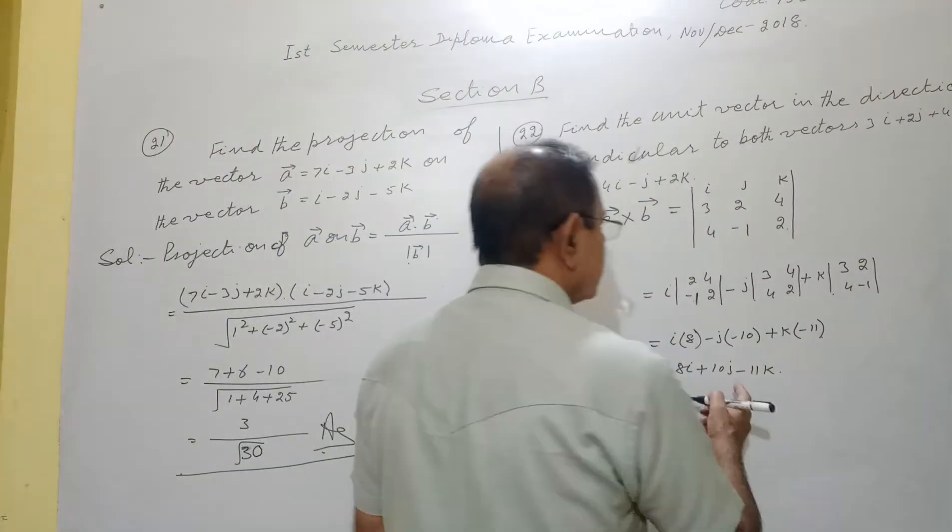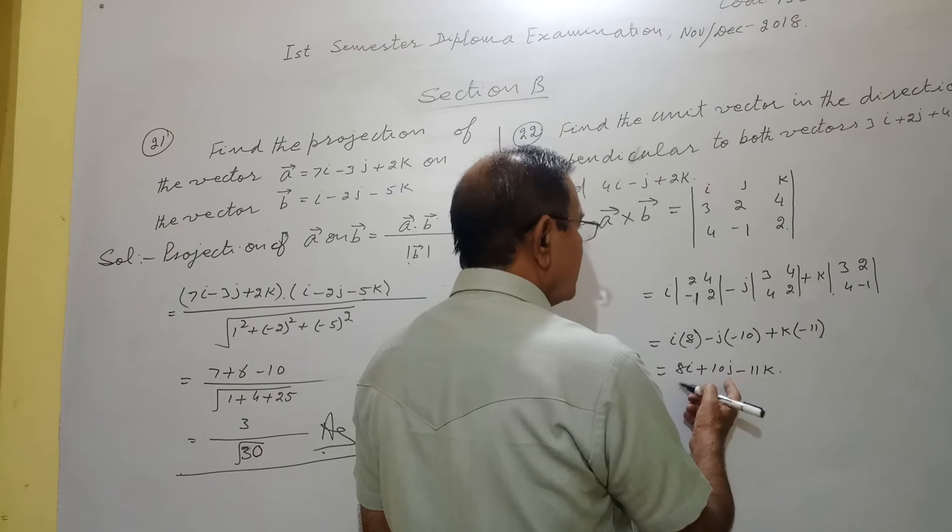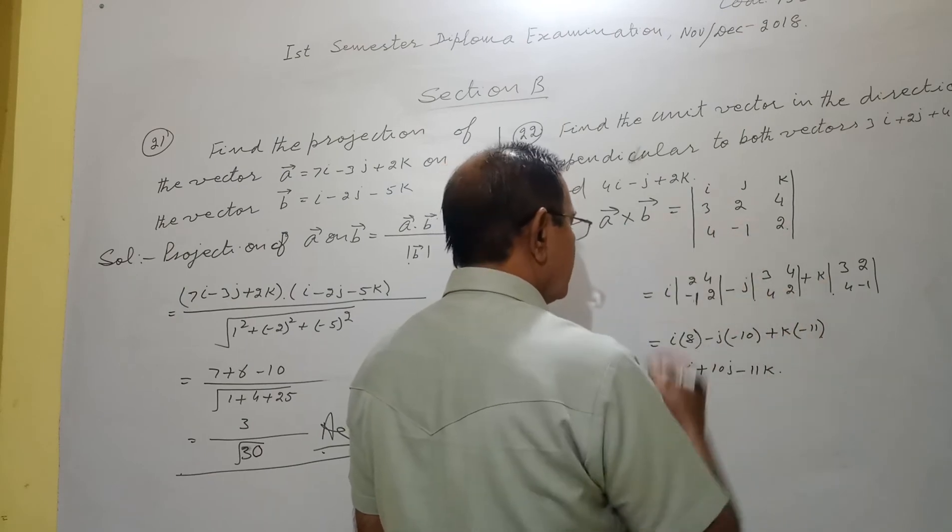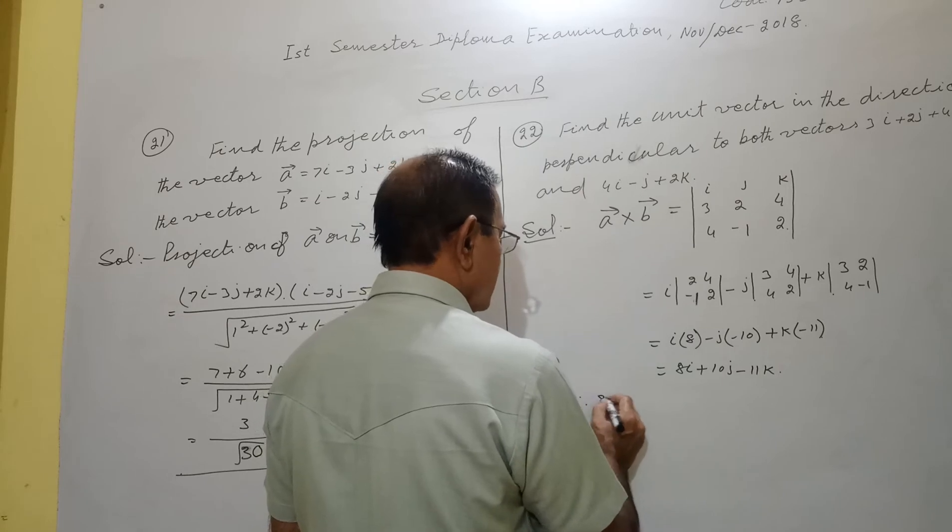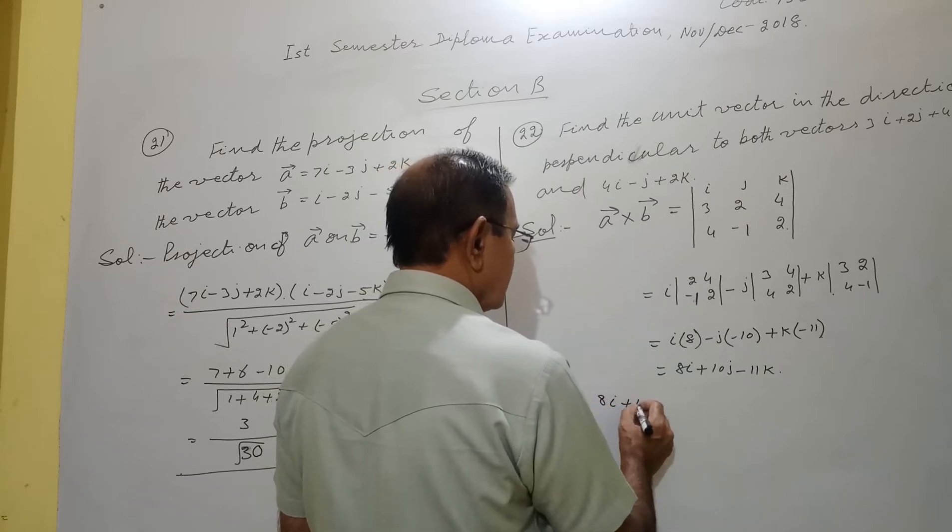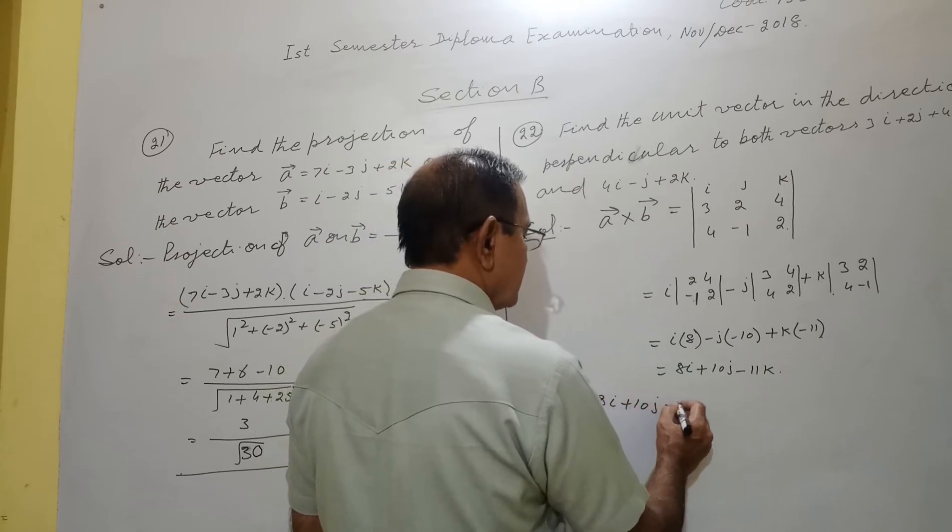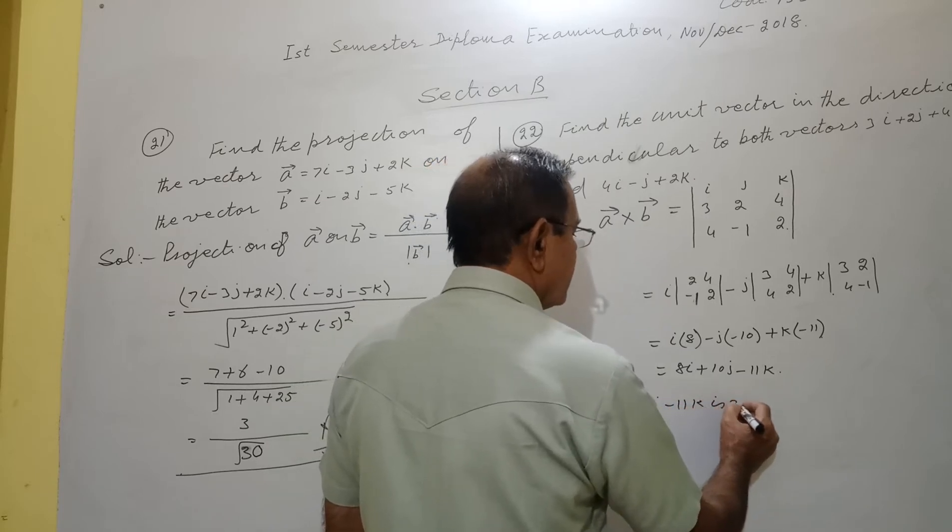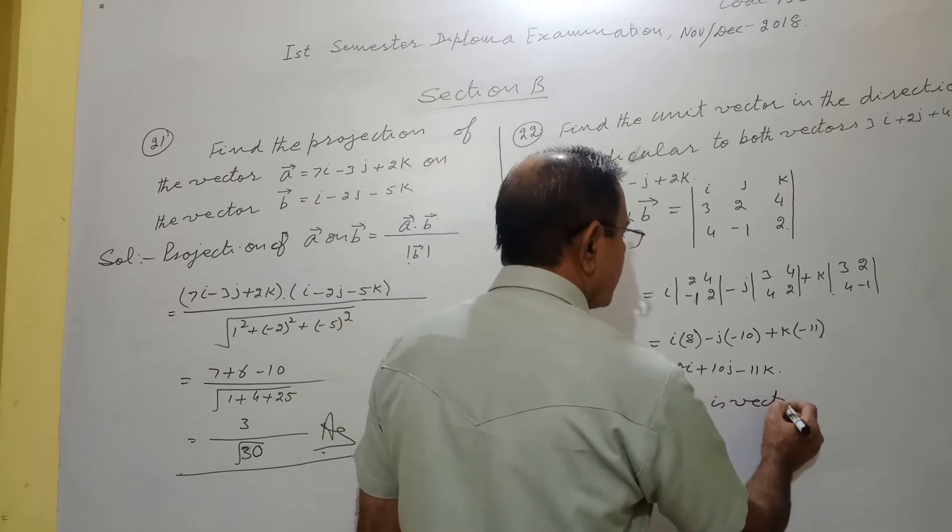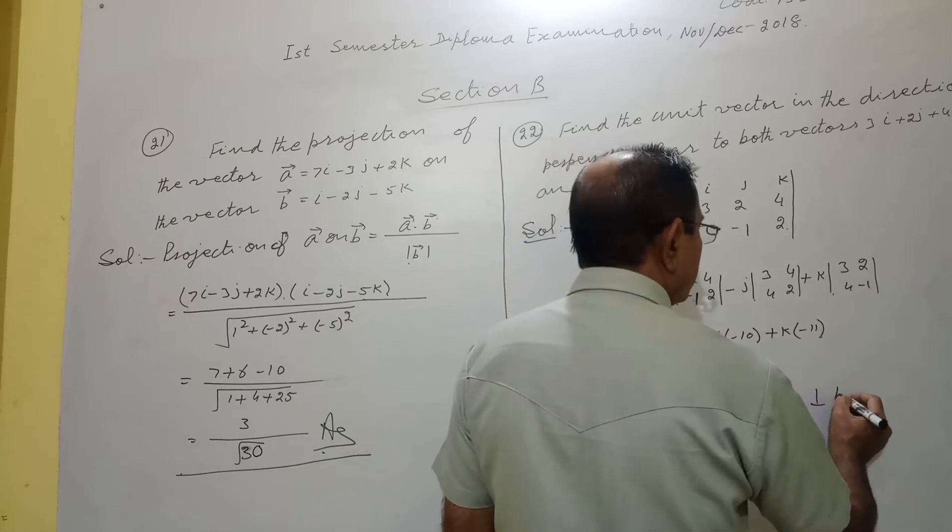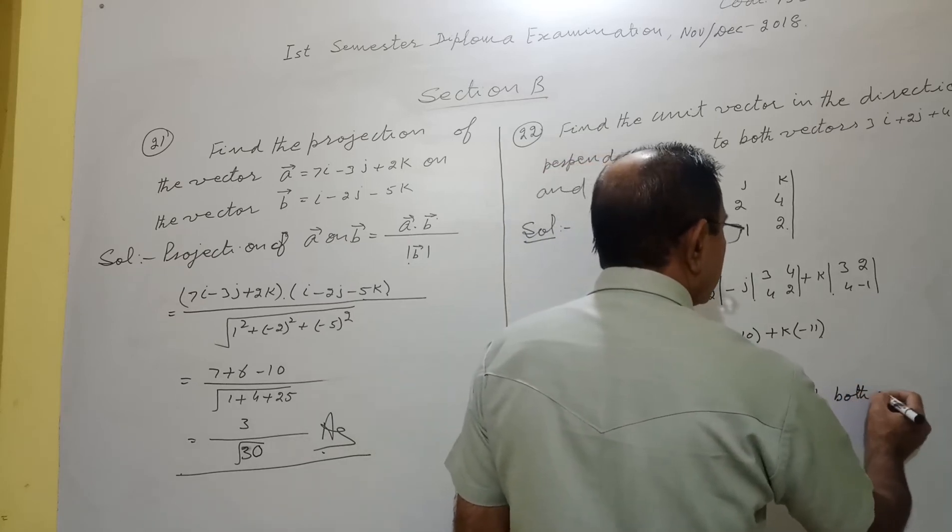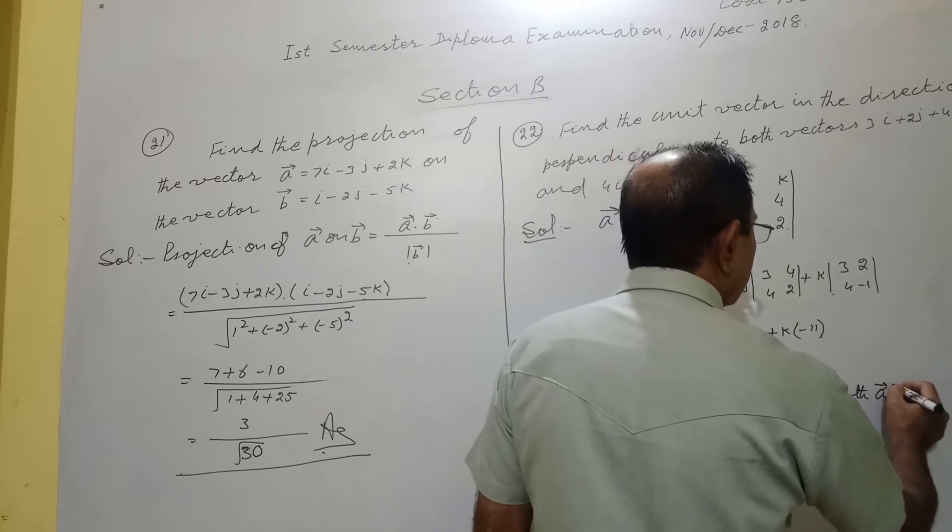And this cross product vector is always perpendicular to both the vectors. Therefore, 8i, 10j, minus 11k is a vector perpendicular to both a and b.